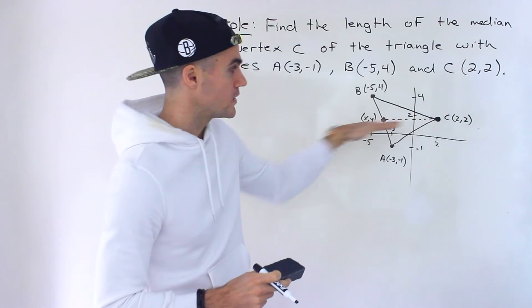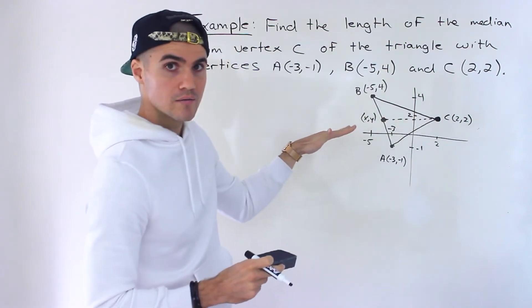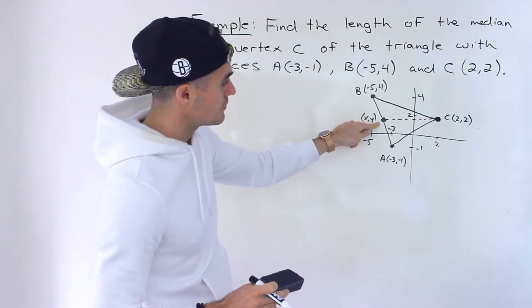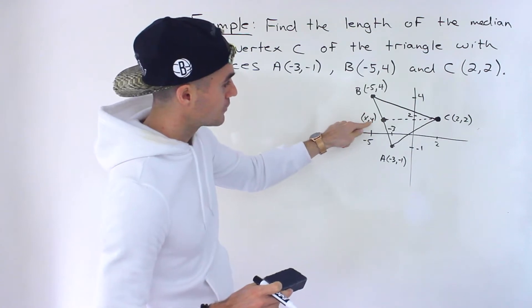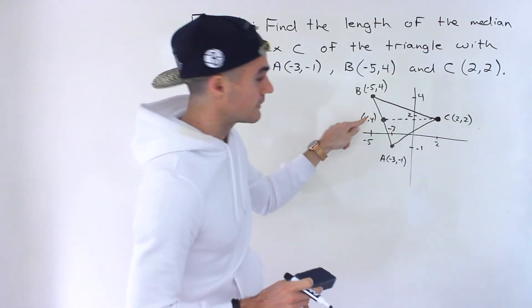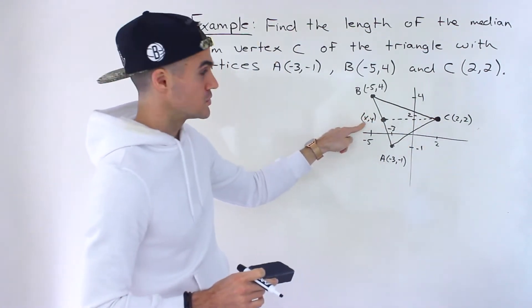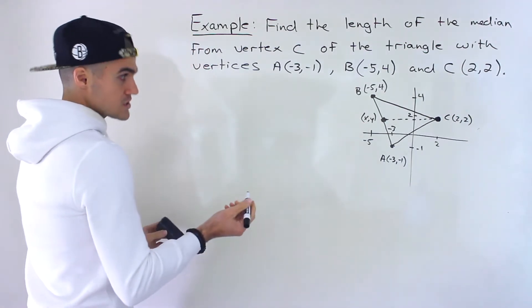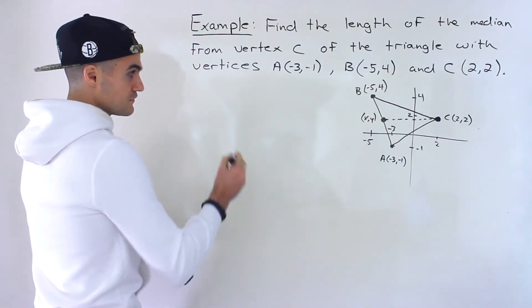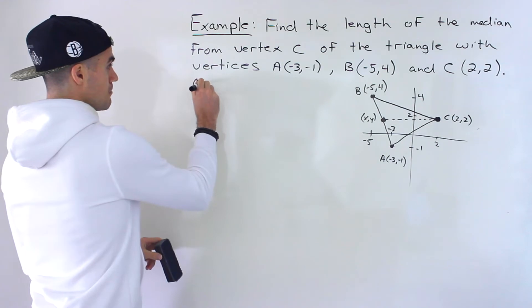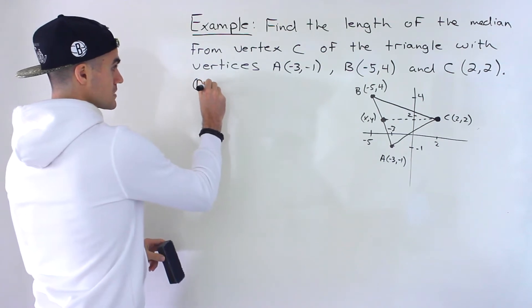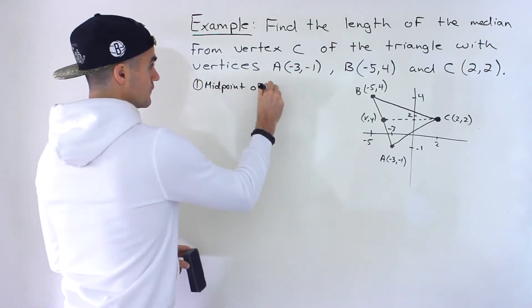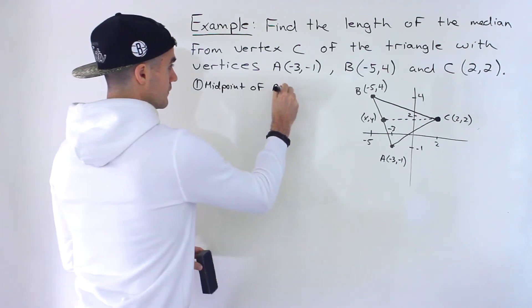We don't even have to find the equation of the median. In previous videos we found the equation. In this case we just have to find the midpoint, and once we have the midpoint we can find the length between those two coordinates. So the first step is finding the midpoint of AB.